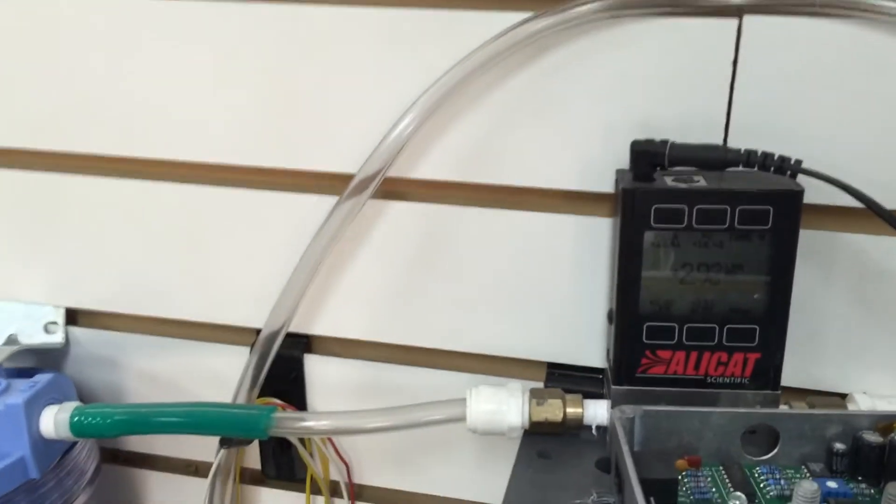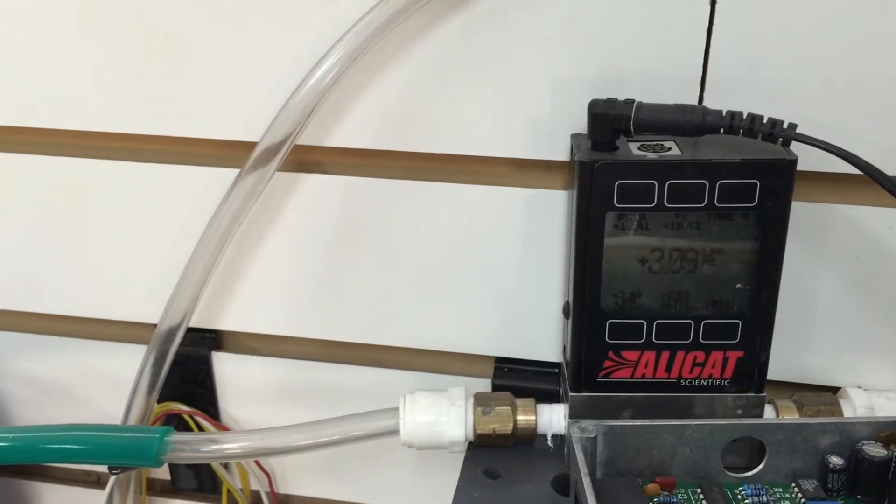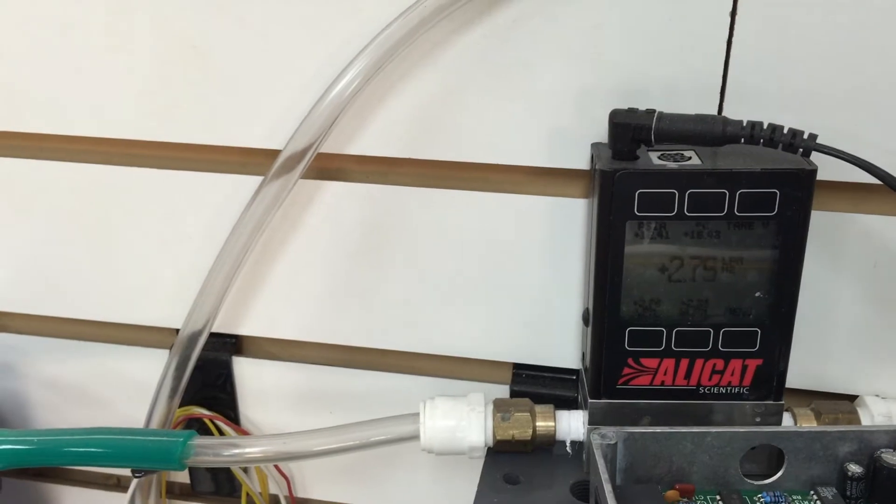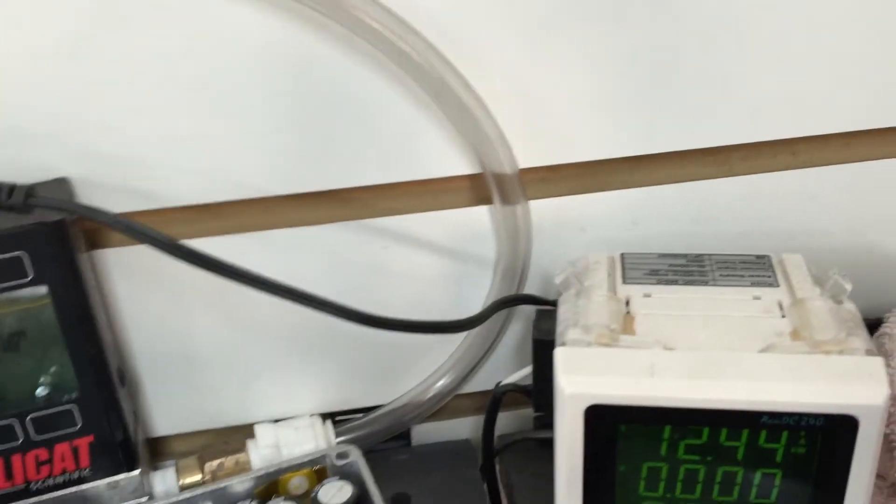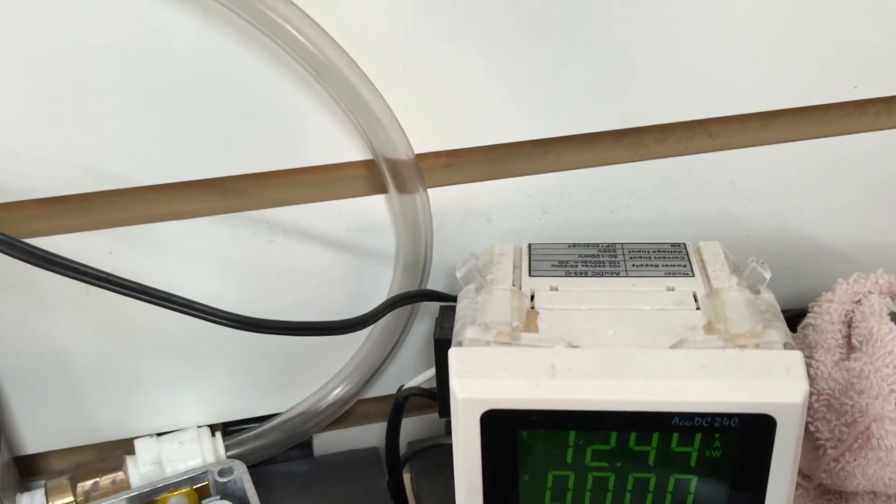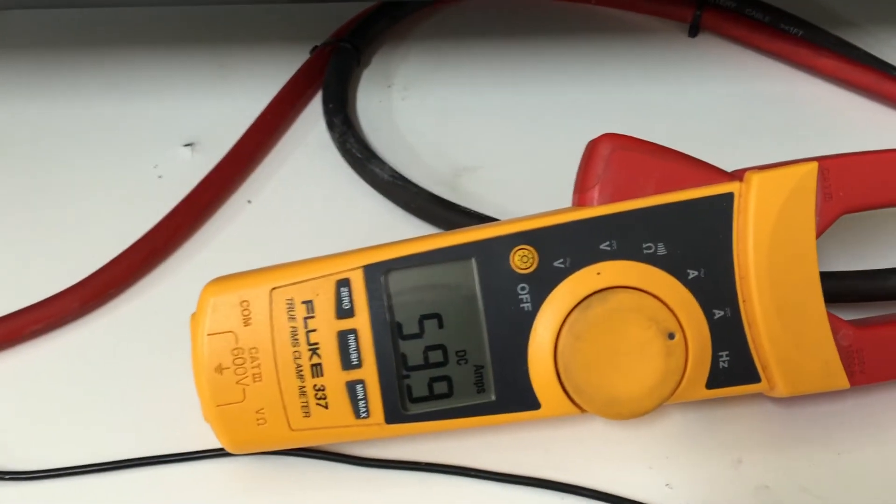And you can see that the cell is producing about 2.8 to 3 liters a minute. And right over here, this gauge will show the voltage, 12.44 volts. Now here we've got the average, right about 60.